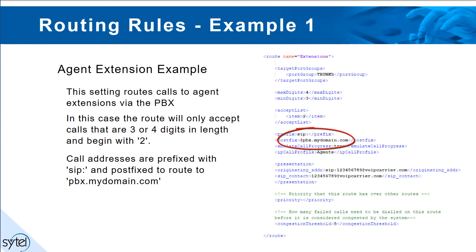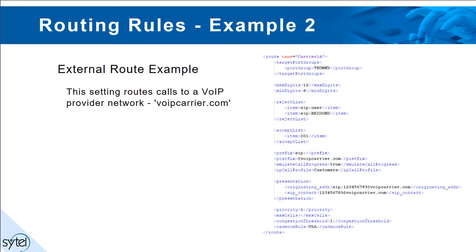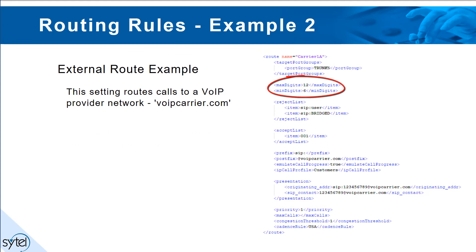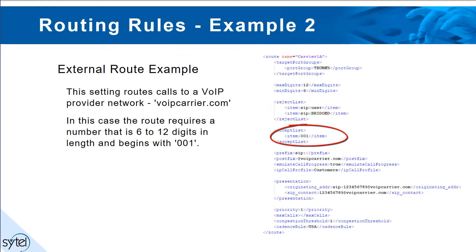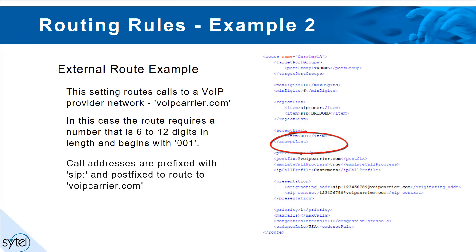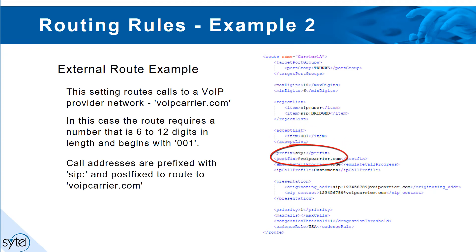Example 2: this example routes calls to a VoIP provider network, voipcarrier.com. In this case the route requires a number that is 6 to 12 digits in length and begins with 001. Call addresses are prefixed with SIP colon and are postfixed to route to domain voipcarrier.com.